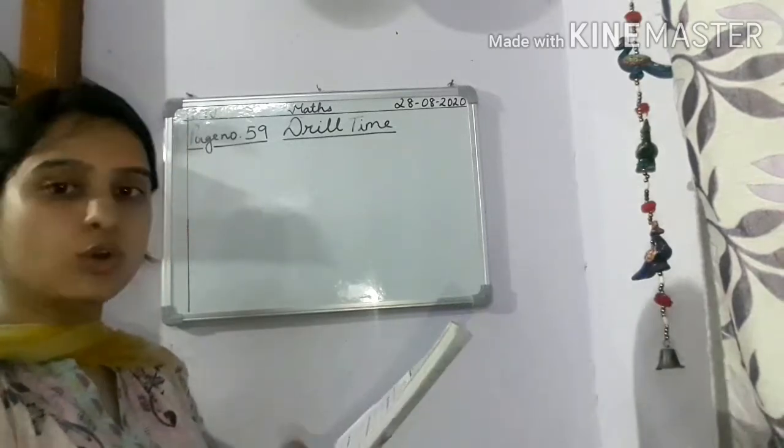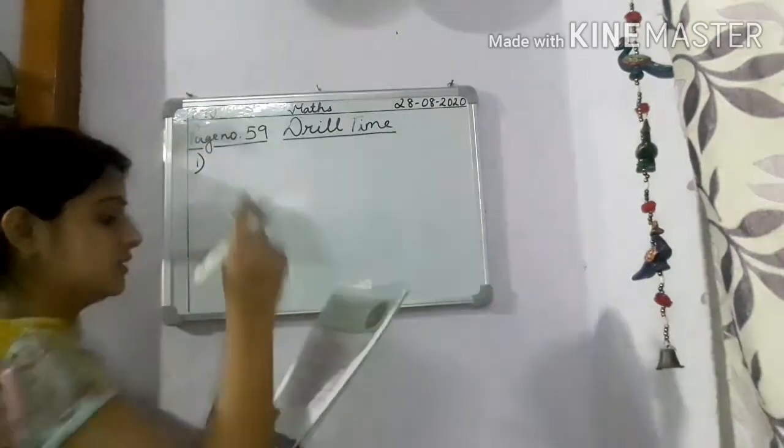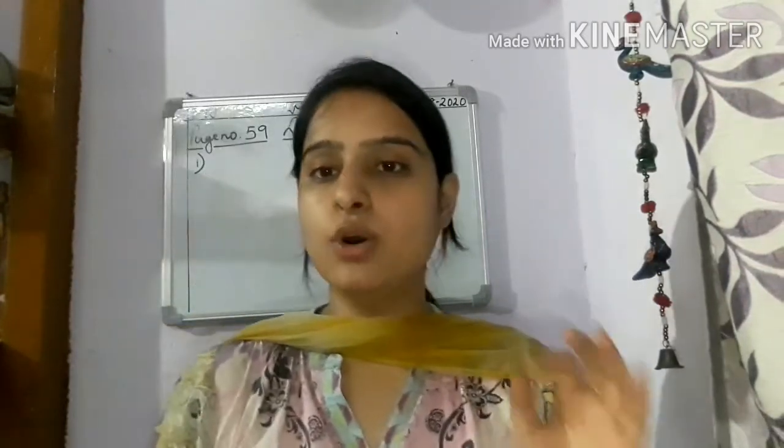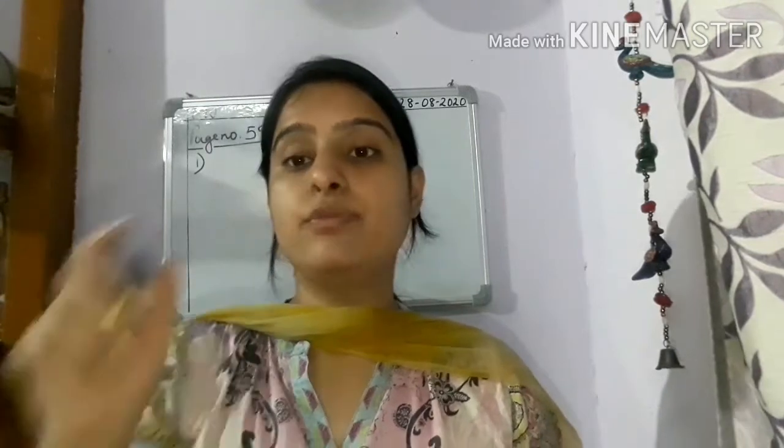Our first question is add the following numbers using number line. So you know how to add using number line, we have already done, isn't it? How do we add using number line? First we draw line, then we give equal space, then children we put numbers on that space. The lines which we draw, on those lines we put numbers and then we add.